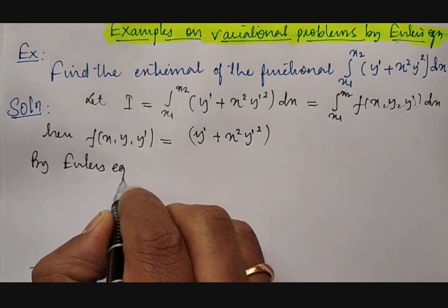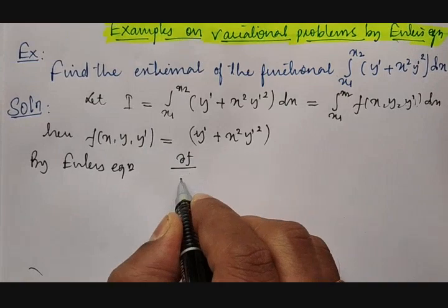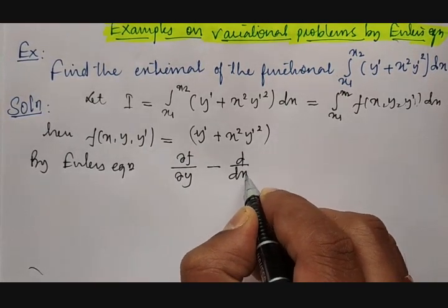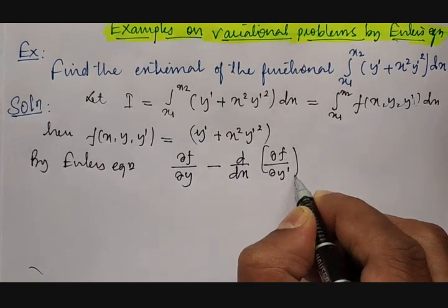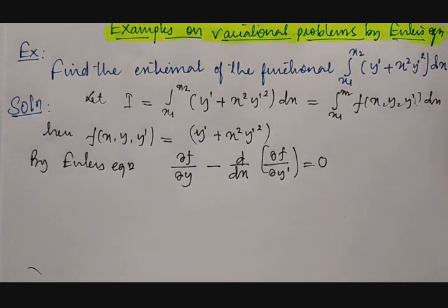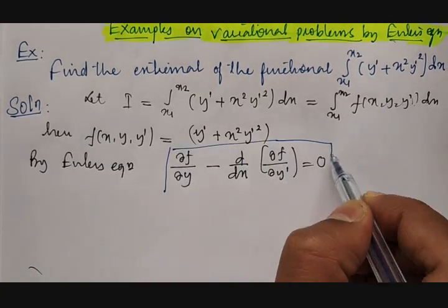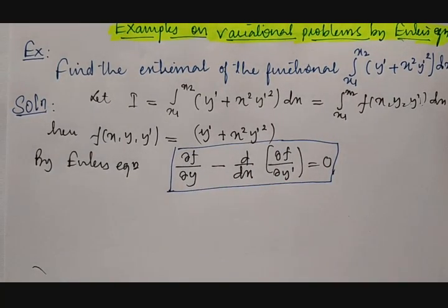Then we have Euler's equation. What does Euler's equation say? Euler's equation says: ∂f/∂y minus d/dx of ∂f/∂y' equals 0. This is the Euler's equation which we discussed in the previous class, and by using this result we are going to obtain the extremal of the given function.